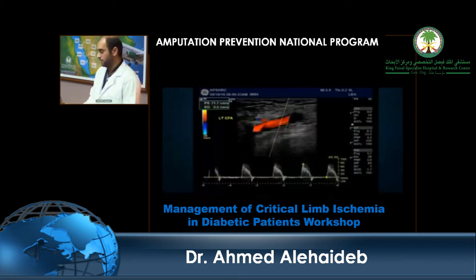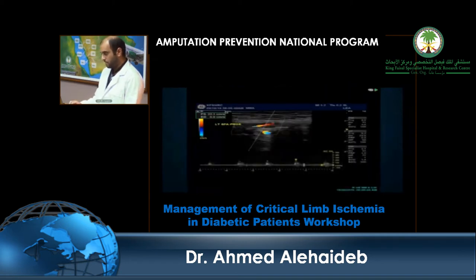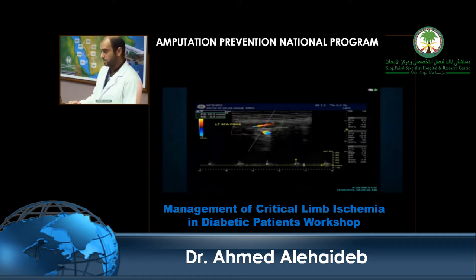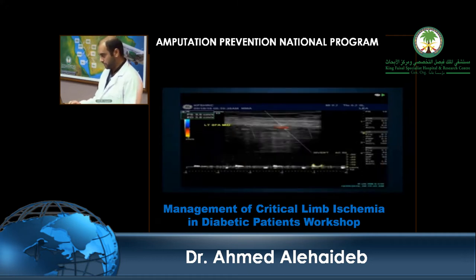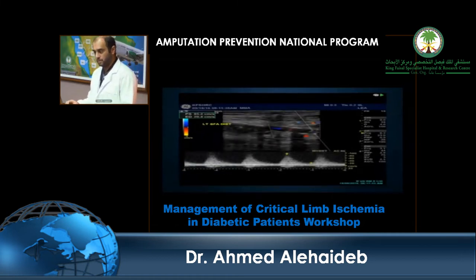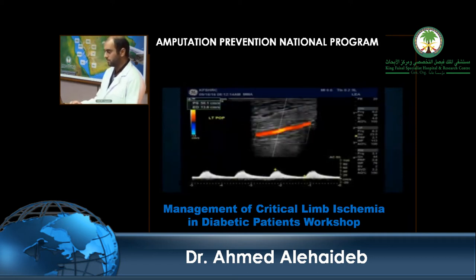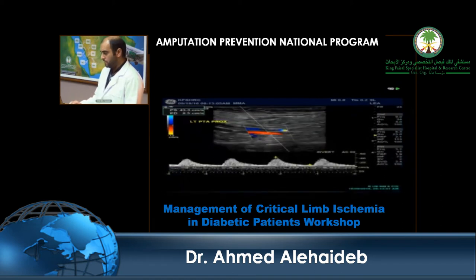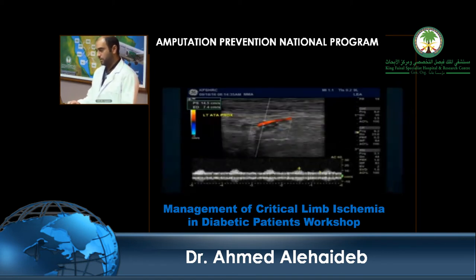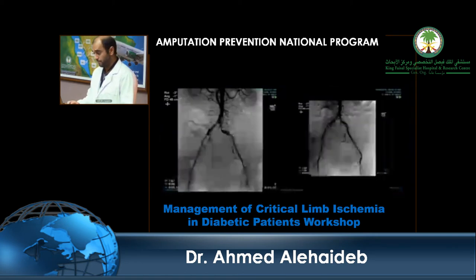The left common femoral artery showed biphasic waveform and was patent. The proximal SFA shows abnormal waveforms with very sluggish flow of 22 centimeters per second, with further slowing of the flow, but with significant reconstitution of the flow at the distal SFA as well as the popliteal artery. The posterior tibial and anterior tibial arteries are patent with good waveforms.